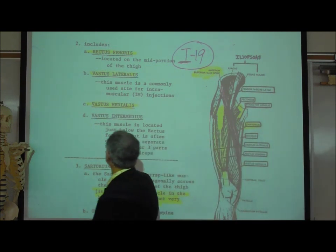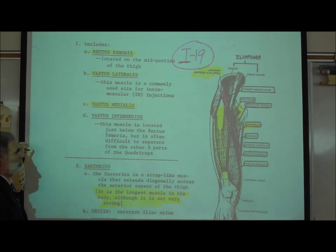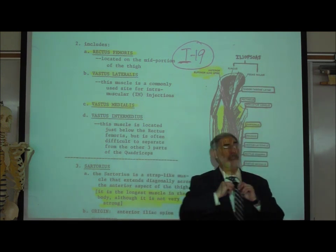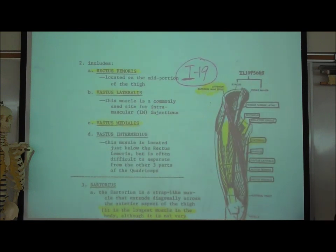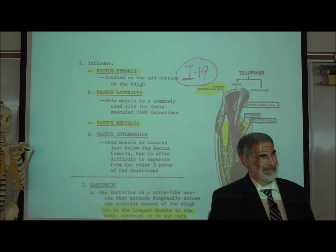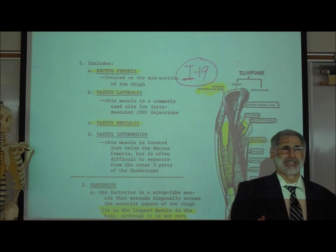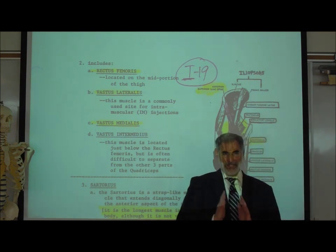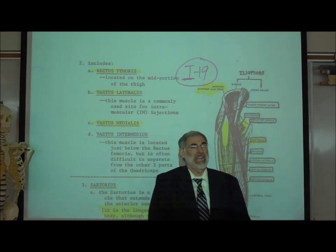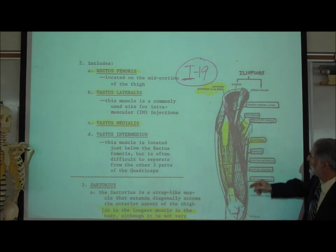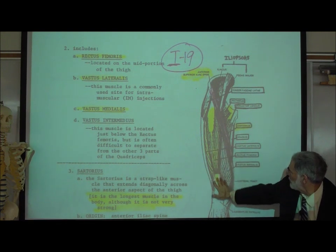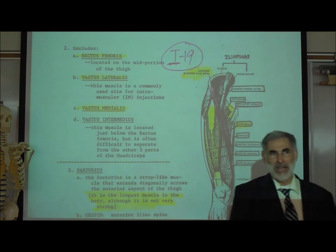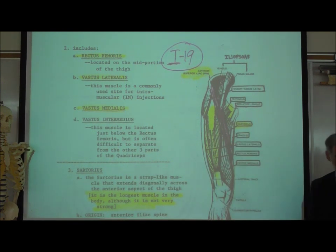There's the rectus femoris, vastus lateralis, vastus medialis, and vastus intermedius. Now again, this is much simpler than it sounds. The rectus femoris - didn't we ever learn what rectus means? It means straight. Rectus abdominis is the straight muscle on both sides of the linea alba. So this is the rectus femoris, running straight right here on the front. Rectus femoris - what does that literally mean? Straight along the femur.